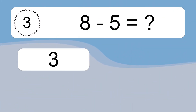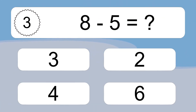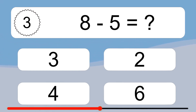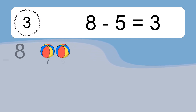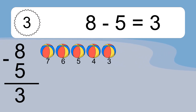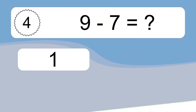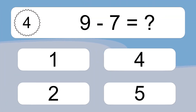8 minus 5 equals what? 8 minus 5 equals 3. Let's count it: 7, 6, 5, 4, 3.